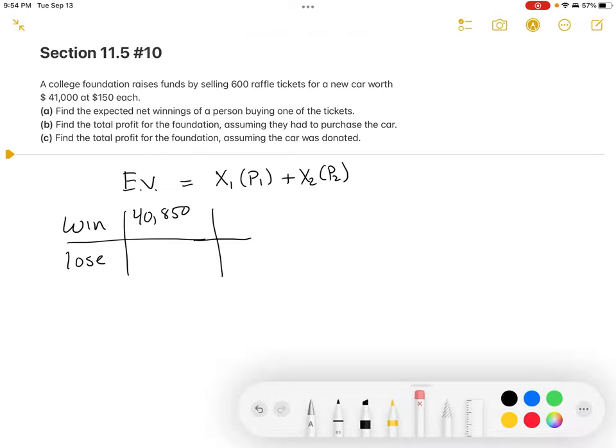If they lose, they walk away with no car and they're out $150. That negative sign is very important - it shows the person ended up losing money. That's the majority of people. Only one person is going to win the car out of 600 tickets sold. So 599 people are going to be out $150, while one lucky person gets the $41,000 car.